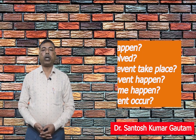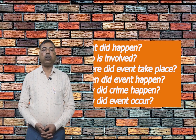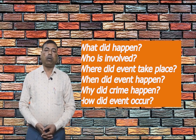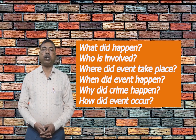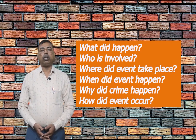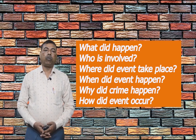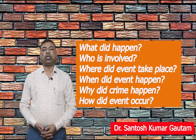For example, if you are writing a story about a gang rape, you will need to answer questions like these. Number one, what did happen — the news provides an answer about the incident or event. Number two, who is involved — the information should identify the culprit or victim. Number three, where did the event take place — you should explain the place of the incident. Number four, when did the event happen — it indicates the time of the incident. Number five, why did the crime happen — you should mention the reason. And lastly, how did the event occur — you should discuss the process of the incident in detail.